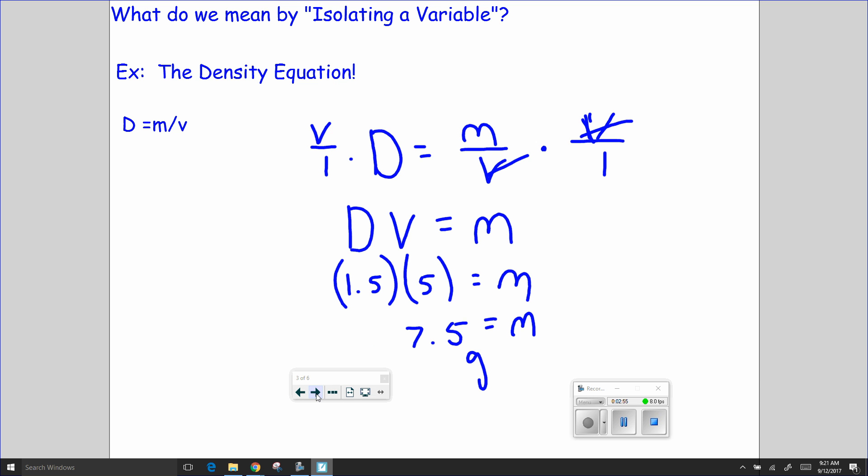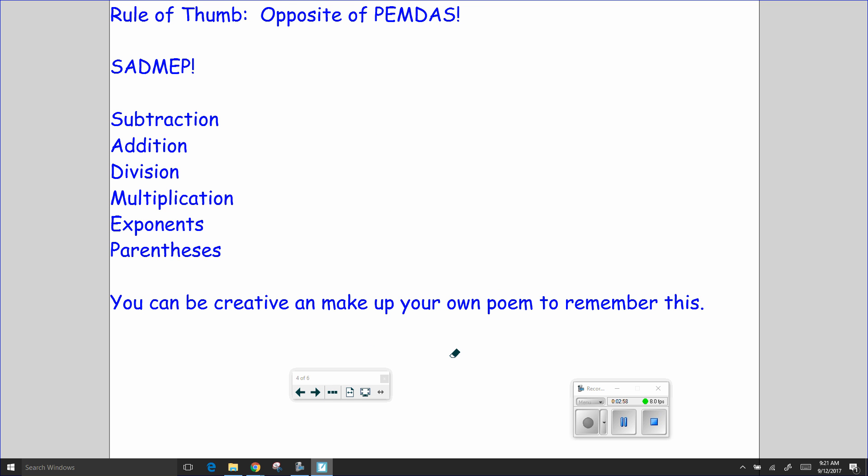Let's do something a little more difficult after we see the rule for isolating a variable. So the rule of thumb for isolating variables is you perform the operations opposite of PEMDAS. Opposite of please excuse my dear Aunt Sally. Instead, you're going to use SADMEP. Subtraction, addition, division, multiplication, exponents, parentheses. If you can think of another way to remember SADMEP besides SADMEP, go ahead and use it. Whatever will help you remember how to isolate a variable.